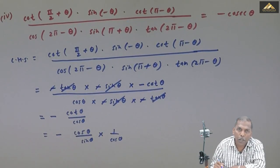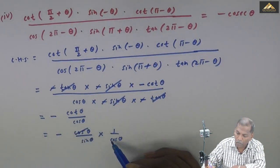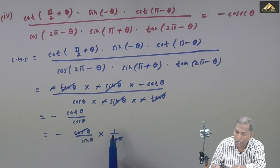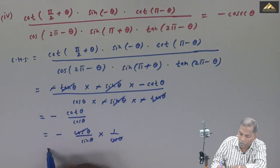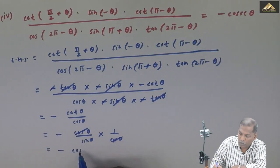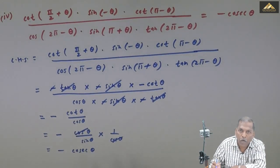Now cos theta cancels from numerator and denominator, so we are left with minus one upon sin theta, which gives us the answer minus cosec theta. That is equal to RHS.